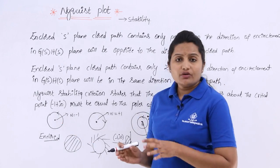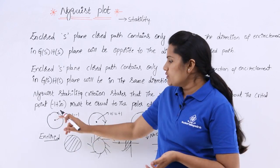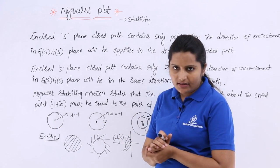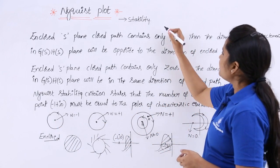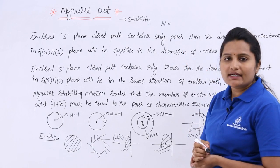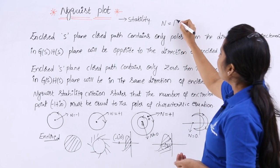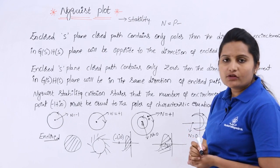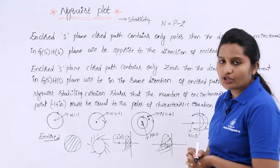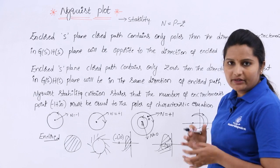When you are having only poles in that encircled region, here you have one encirclement. The number of encirclements N is equivalent to the number of right-sided poles minus the number of right-sided zeros: N = P - Z. This is the encirclement formula.